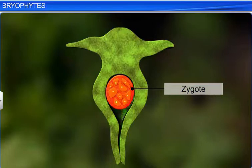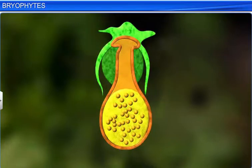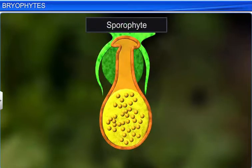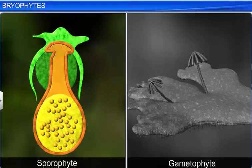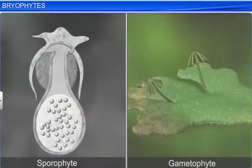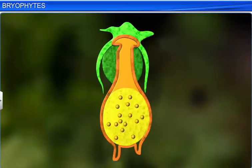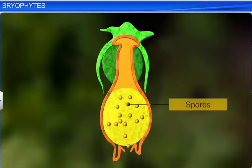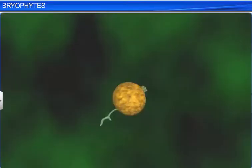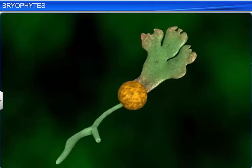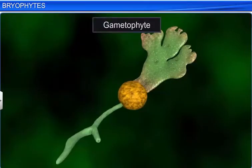The zygote in turn produces a multicellular body called the sporophyte. The sporophyte gets its nutrition from the gametophyte. Some cells of the sporophyte undergo meiosis to produce haploid spores. These spores germinate to produce a gametophyte.